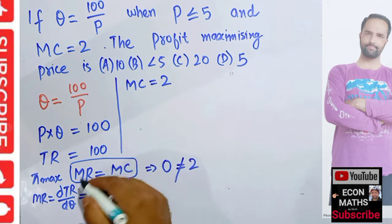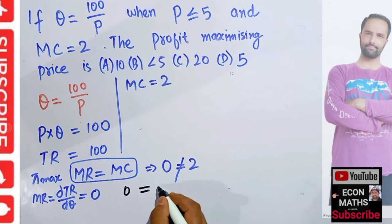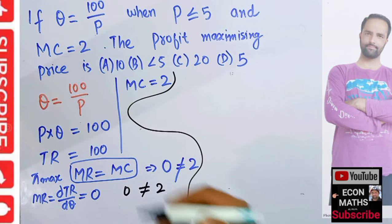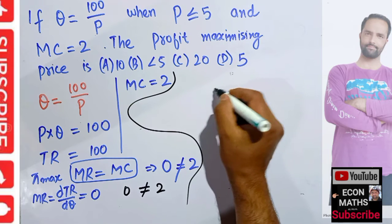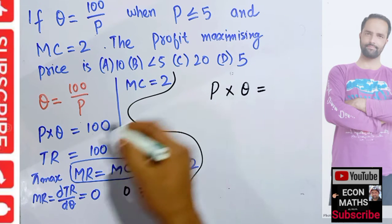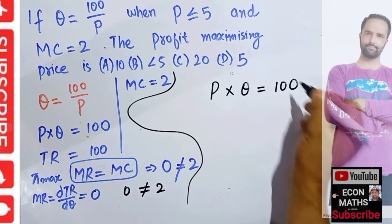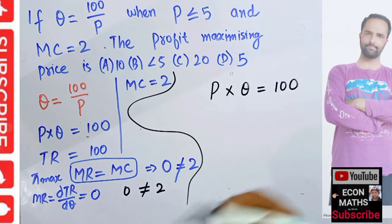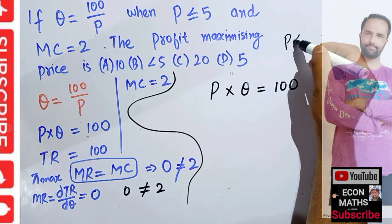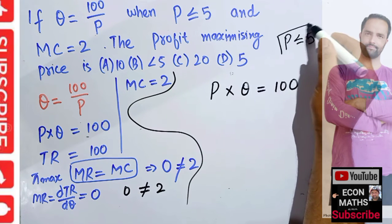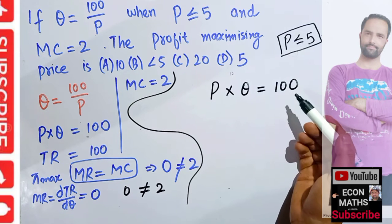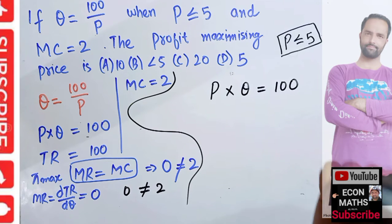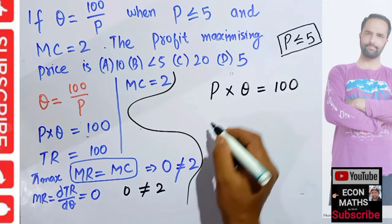Because marginal revenue came out to be zero and marginal cost is 2, we cannot apply the standard MR equals MC logic here. Looking at our setup, price times output equals 100, meaning total revenue is constant. We are also given that price must be less than or equal to $5. When total revenue is constant, the firm will charge the highest possible price.